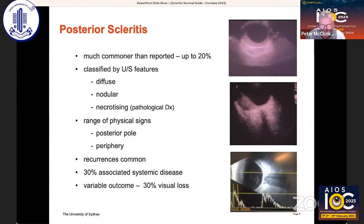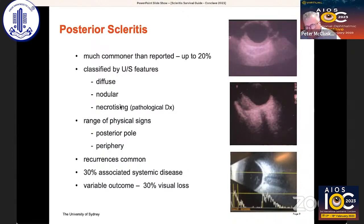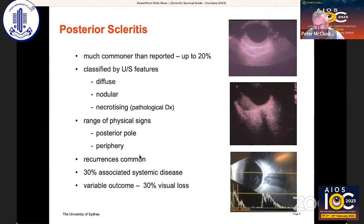Posterior scleritis has been underappreciated in the past. We can use the same classification of diffuse and nodular. We can't diagnose necrotising posterior scleritis except during an operation when we can see it, or pathologically. There's a range of physical signs that I'll briefly go through.